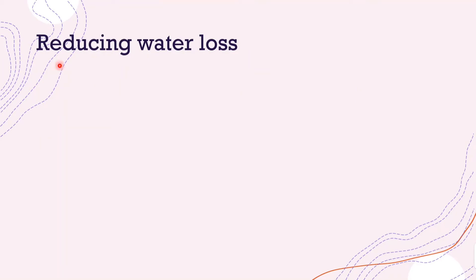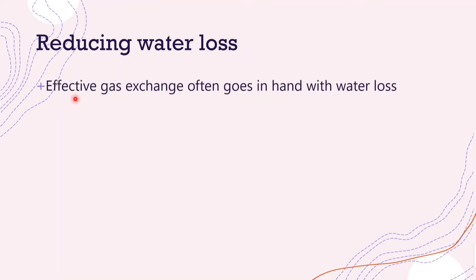So how does a plant reduce water loss? Effective gas exchange often goes hand in hand with water loss — if a leaf has effective gas exchange, it is highly probable that it would also have a lot of water loss.